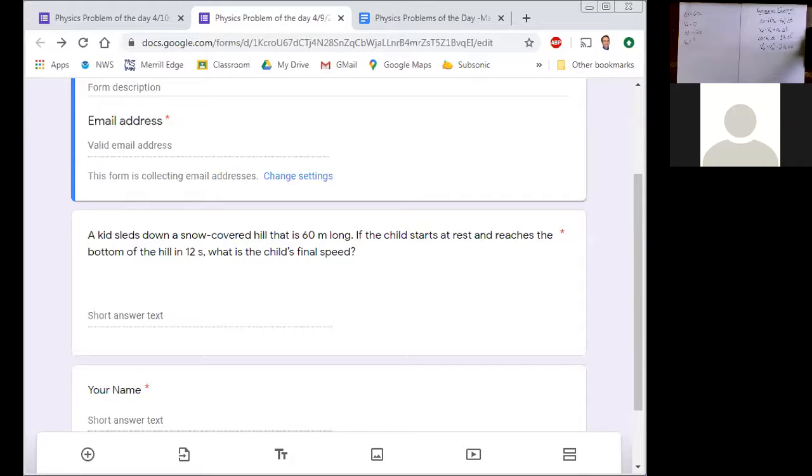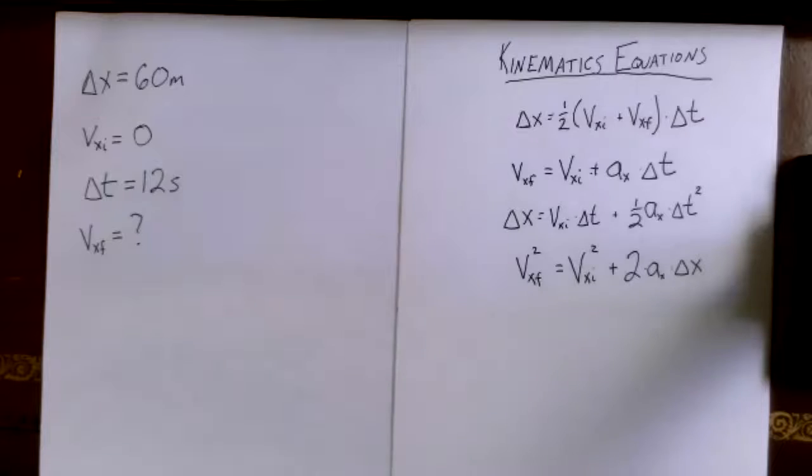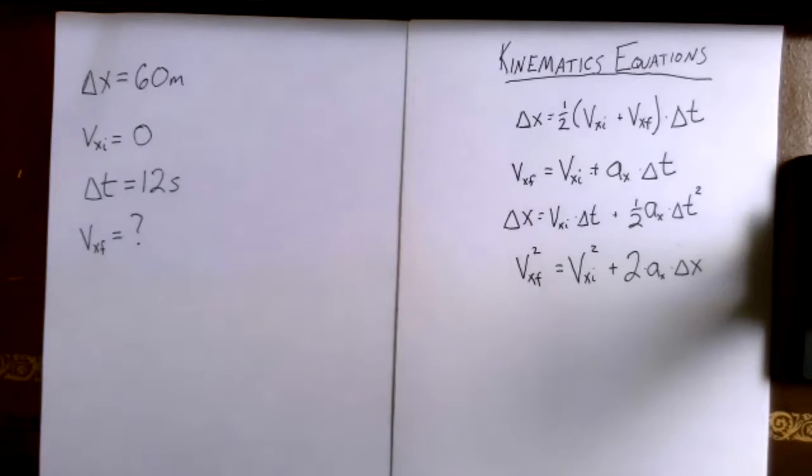Great, so now we can go on to step three, which is to pick our equation. We need the equation that's got Δx, V_xi, Δt, and V_xf in it. Which is the only equation up there that has all of those?